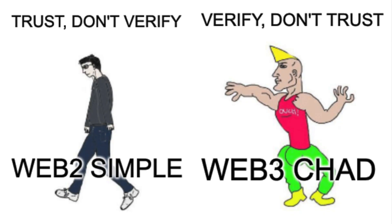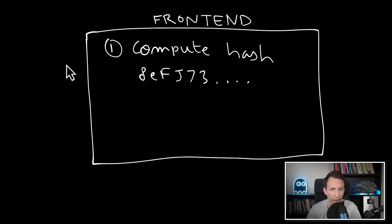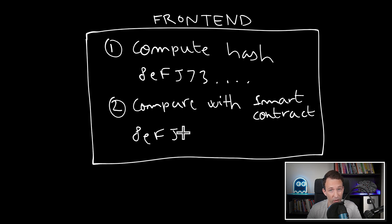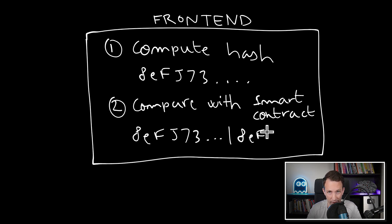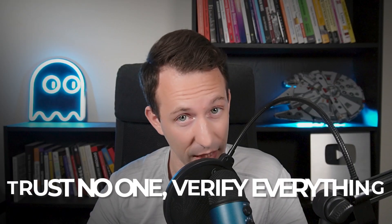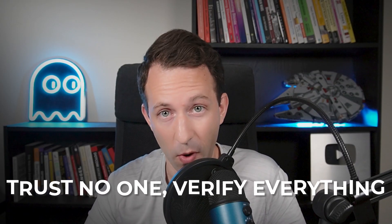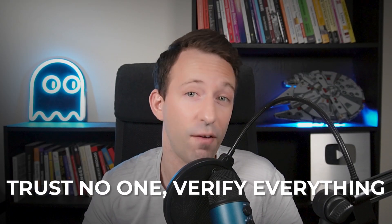But how can we check the integrity of these tweets? All you have to do is compute the hash of a tweet and compare it with the hash you got from the blockchain. If the tweet is authentic, these two hashes will match. Always keep in mind: trust no one, verify everything.